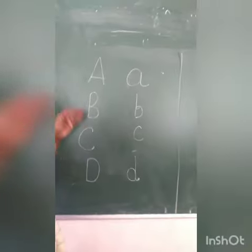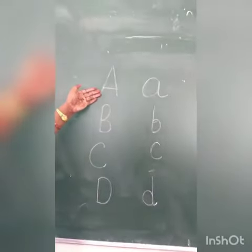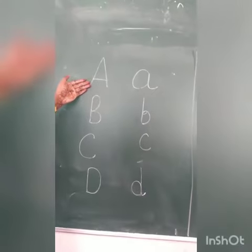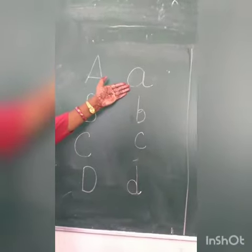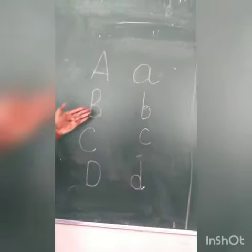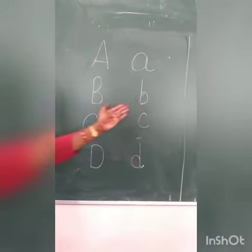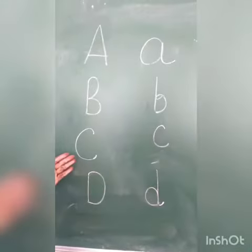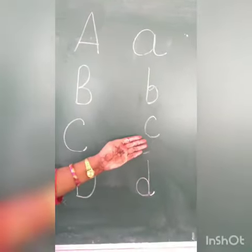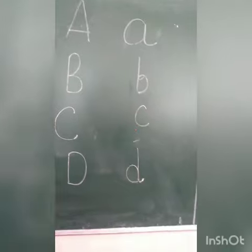So children, you need to completely read and learn all of these. This is your capital letter A, and this is your small letter A. Capital letter B, small letter B. Capital letter C, small letter C.